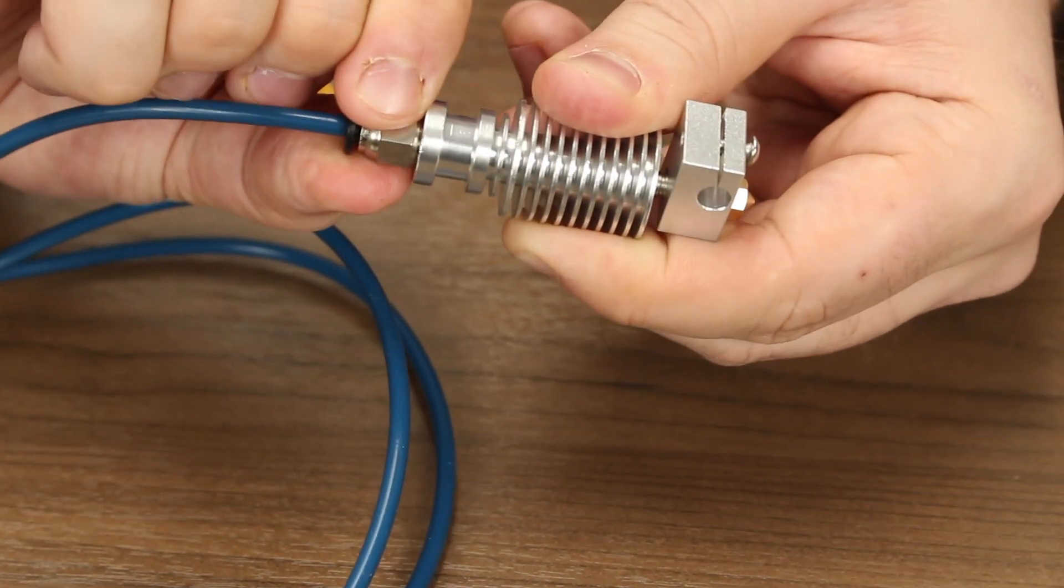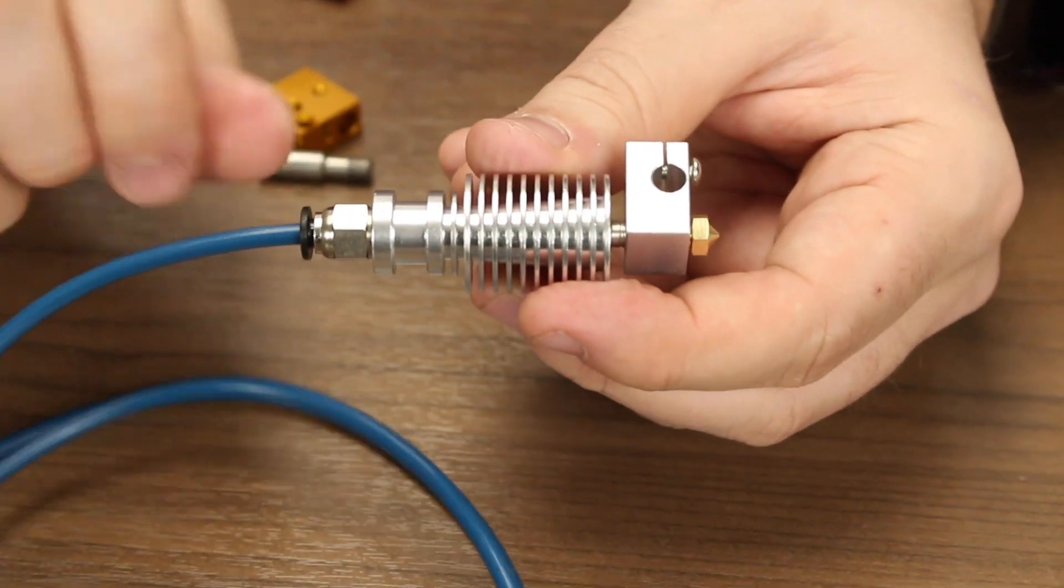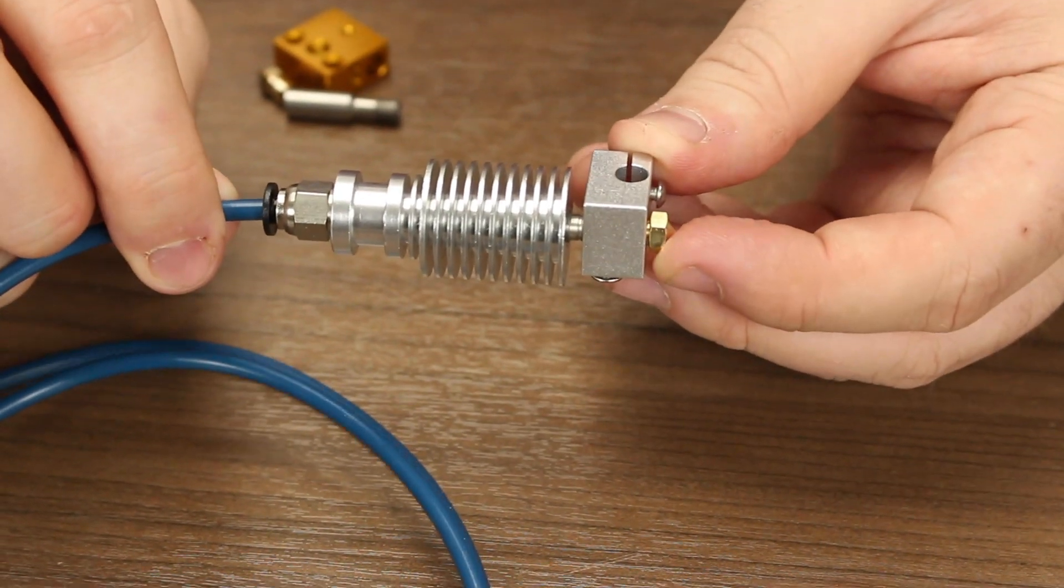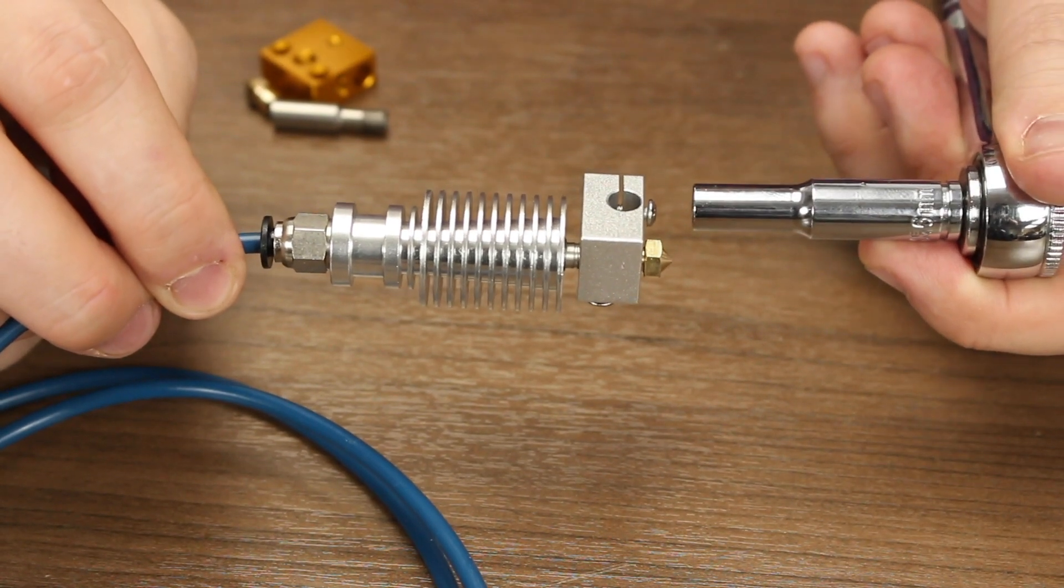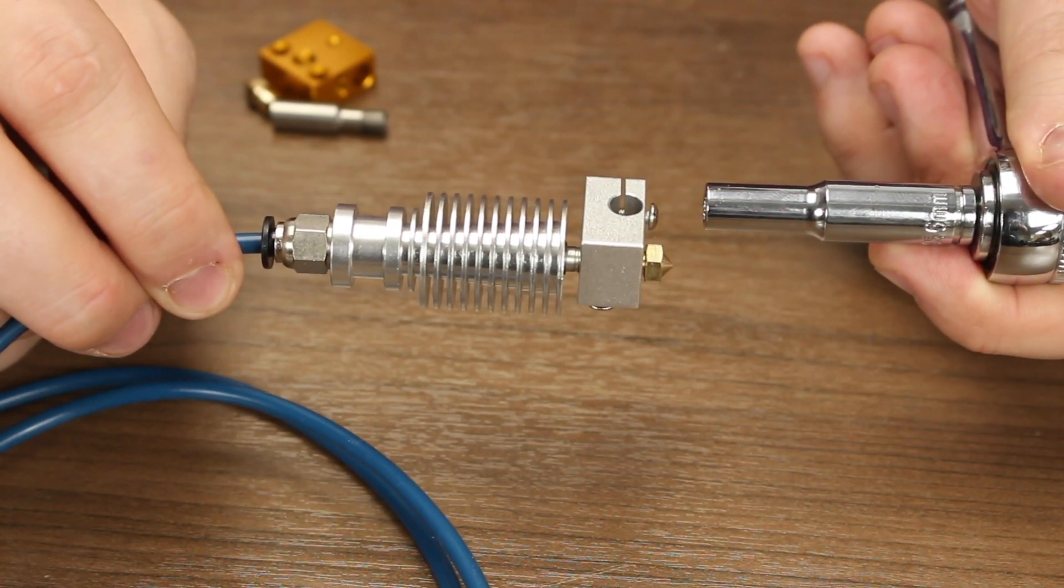The last step in this process comes after your hot end assembly is mounted on the printer and heated. Take your socket wrench and very carefully tighten the nozzle. Don't over tighten, as it is possible to break the head of the nozzle clean off.